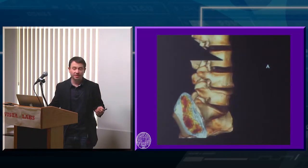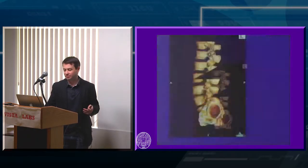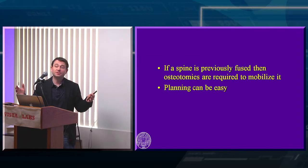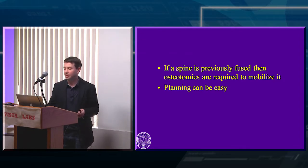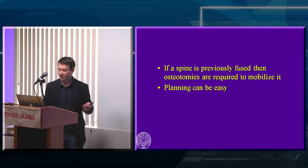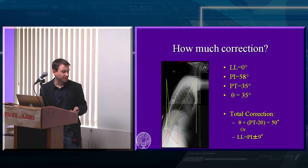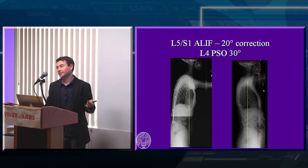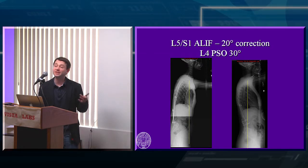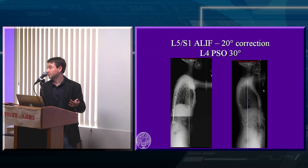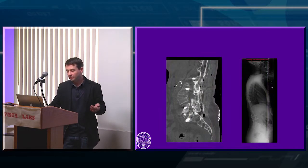It looks easy on a model, but when you have the dura and nerves in your way it gets trickier. If the spine is previously fused it's easy to calculate the correction — if you need 30 degrees you plan 30 degrees and it works. I showed yesterday how I calculate SVA, pelvic incidence, and pelvic tilt to figure out how much you need. Here's a fixed deformity where I used the only flexible disc remaining and then made my own flexibility with a pedicle subtraction osteotomy at another level.